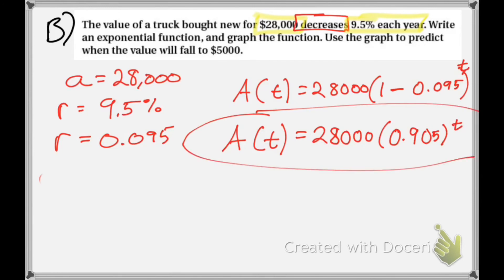Now I'm going to graph this and use that trace function again. Because what I'm looking for is use the graph to predict when the value will fall to $5,000. So when, looking for time, what on my x-axis, when is the corresponding x coordinate going to be equal when my y coordinate is $5,000? So I graph it and use the trace function to try to find when y is equal to $5,000. What's my x value, which is my t value?